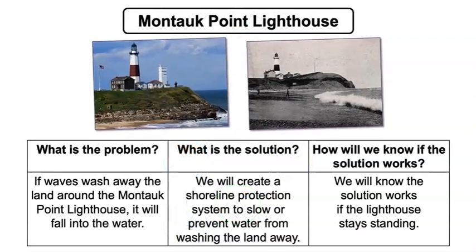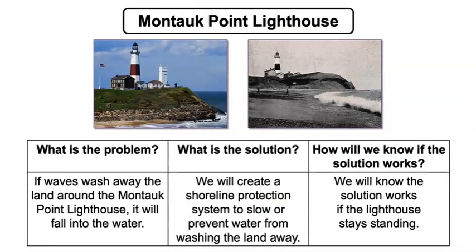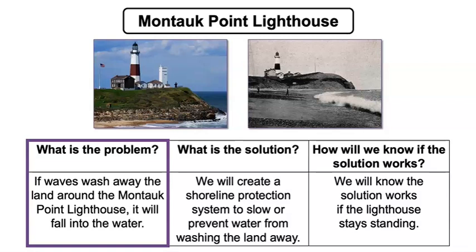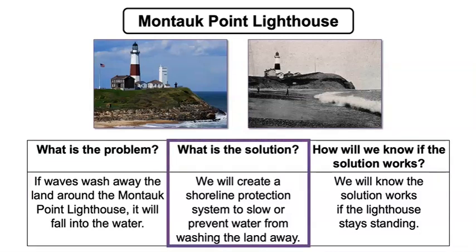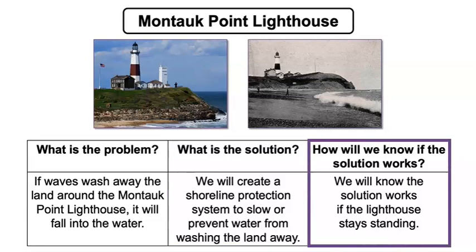In the case of the Montauk Point Lighthouse, we identified the problem that if waves wash away the land around the Montauk Point Lighthouse, it will fall into the water. We decided that the solution to the problem is that we will create a shoreline protection system to slow or prevent water from washing the land away. And we will know the solution works if the lighthouse stays standing.